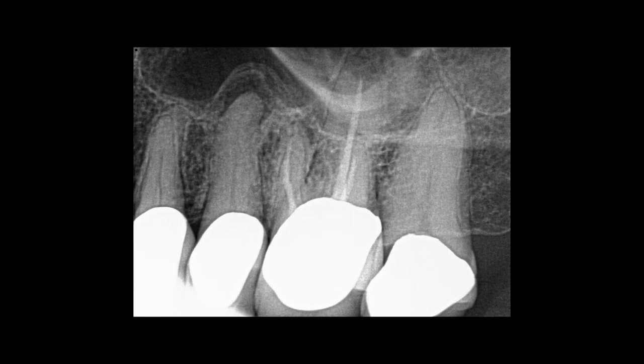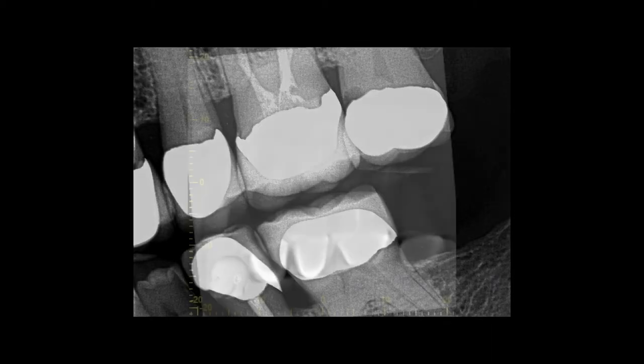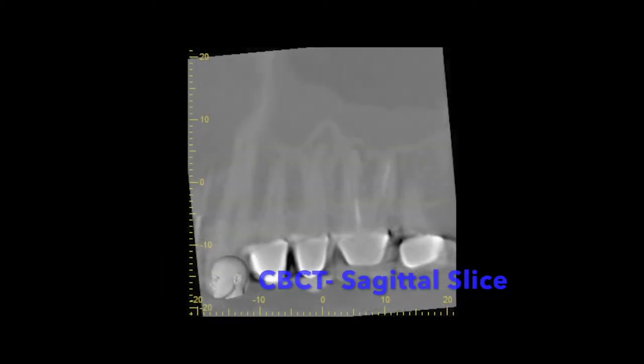Look at the x-ray. You can see a lesion — a periapical radiolucency — on tooth number 13. And you're looking at 14, and look at the decay on 15. It looks like 13 has got an open margin.